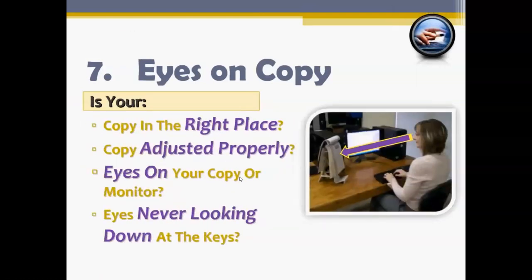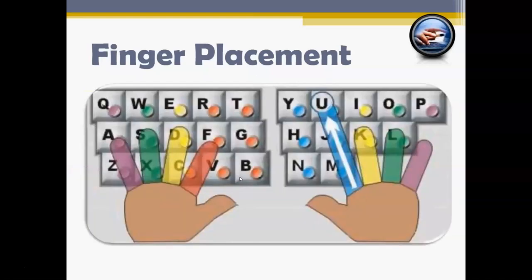Technique seven — last but not least — is eyes on copy. This is what you are typing or copying. You want to make sure your copy is in the right place, adjusted properly, and that you can see it clearly. By looking at your copy and not looking down at the keys, you'll be more speedy and type very quickly.